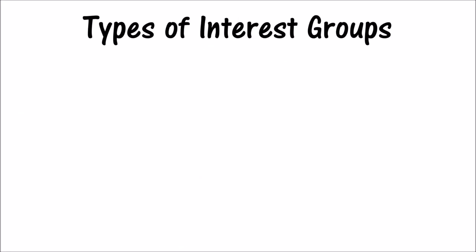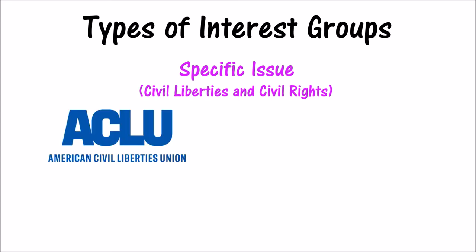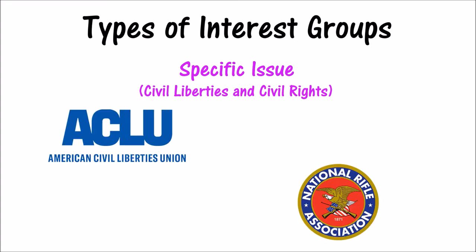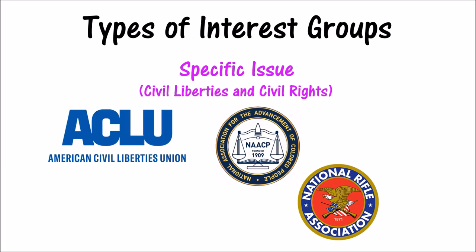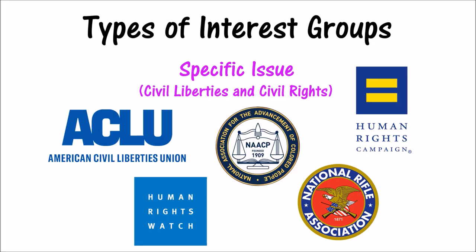There are many types of interest groups. Many are focused on a specific issue citizens feel strongly about, like promoting civil liberties and civil rights. Examples include the American Civil Liberties Union, the National Rifle Association, the National Association for the Advancement of Colored People, Human Rights Campaign, and Human Rights Watch.